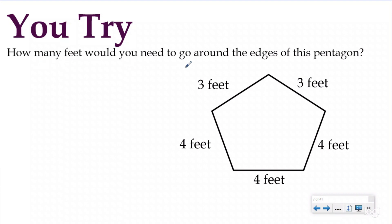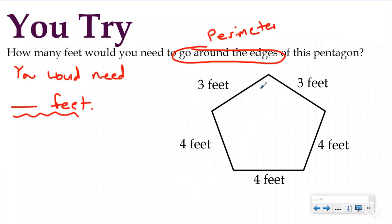So my question said, how many feet would you need to go around the edges of the Pentagon? So I'm going to say you would need blank feet. And based on my statement, I know I'm going to be identifying anything about feet or any other important information in my problem. Now it's asking me how many feet I would need to go around the edges of the Pentagon. That's literally the definition for perimeter. So it's just asking me, what is the perimeter of my Pentagon?